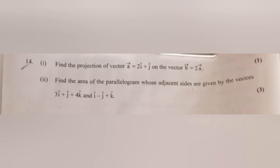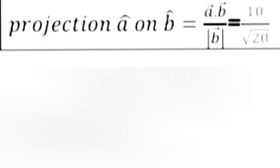Question 14.1: Find the projection of vector a = 2î + ĵ on the vector b = 2â. Answer: Projection of a on b = a·b / |b| = 10/√20.